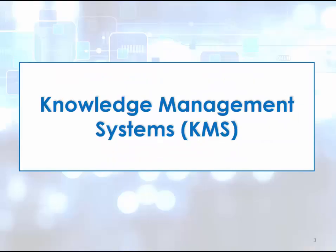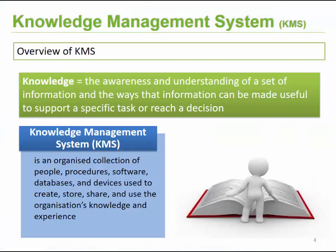Let's start off by looking at knowledge management systems, or typically known as KMS. As we discovered in topic one, knowledge is the awareness and understanding of a set of information and the ways that information can be made useful to support specific tasks or goals. A knowledge management system can be described as a computer-based information system with the aim of ensuring that the knowledge and experience in an organization is recorded.